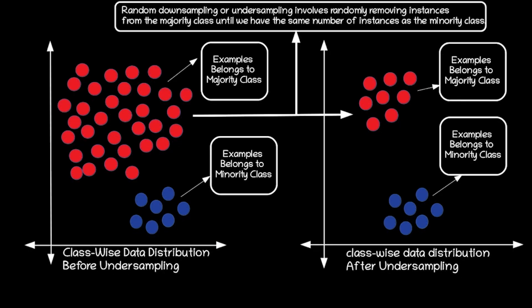There is a disadvantage of random undersampling or downsampling. As we are removing instances from the majority class, there is a chance of losing information from our data, which can negatively impact our model's performance. Therefore, it is crucial to perform undersampling or downsampling very carefully.